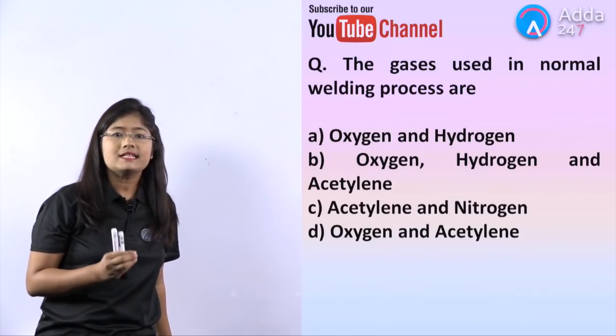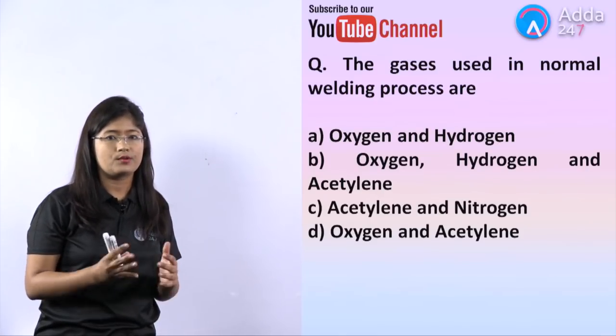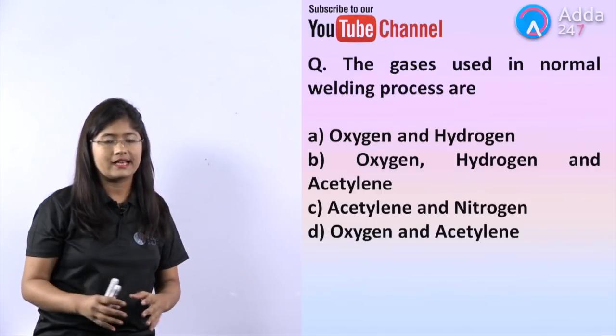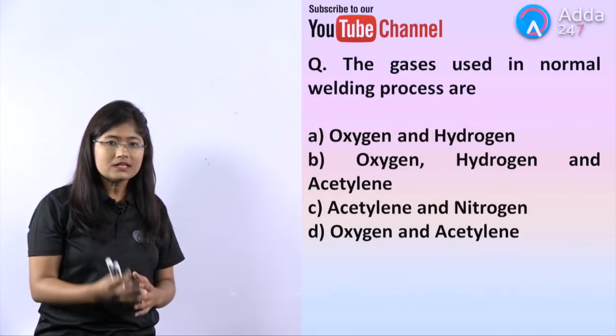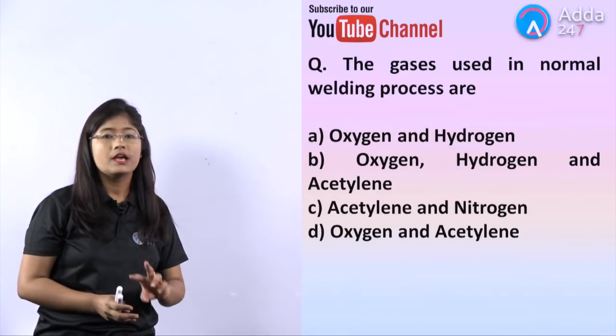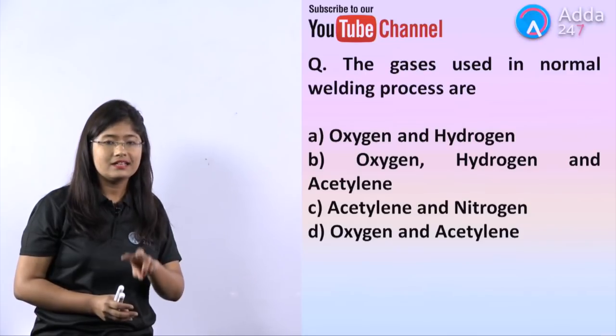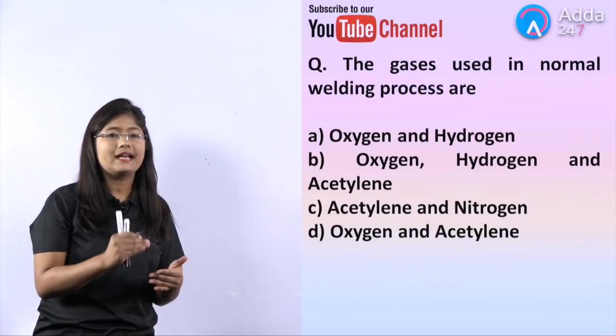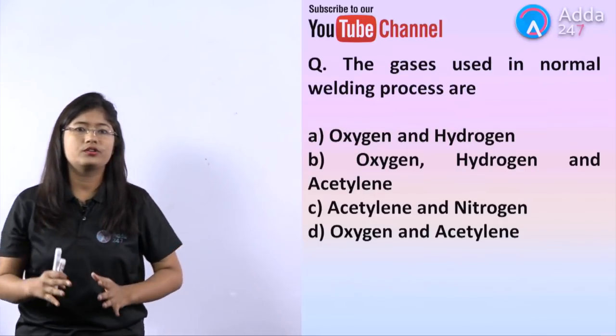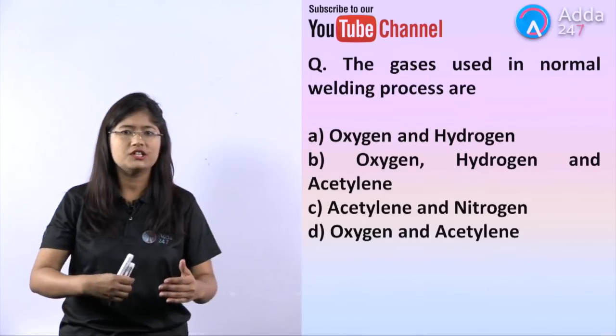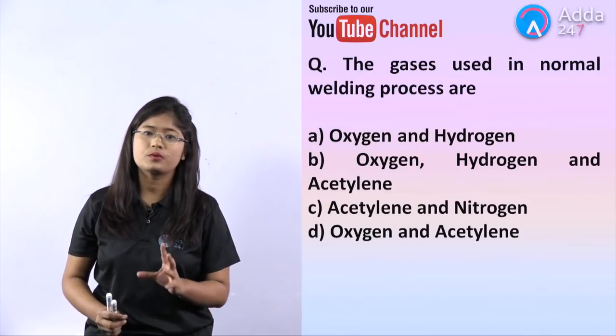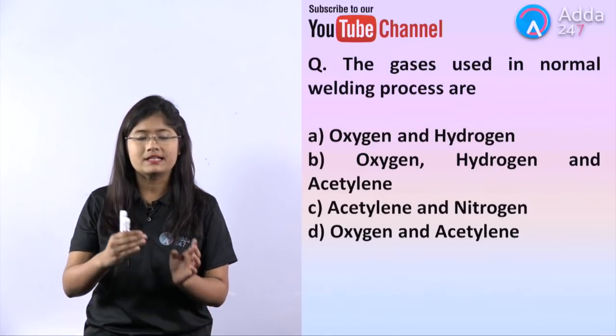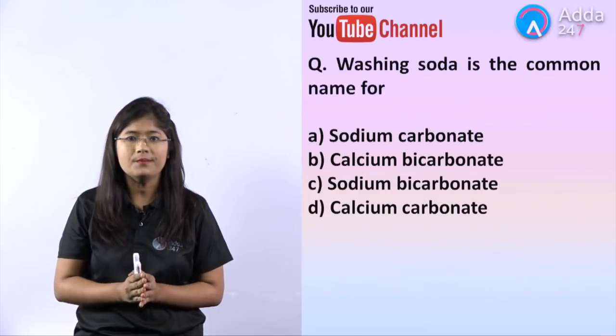The next question is: the gases used in normal welding process? You can use MIG welding or TIG welding, but in normal conditions, you use oxygen and acetylene for sure. You can use hydrogen also, but that is a different level, not generally or commonly used. The most probable answer will be option D.